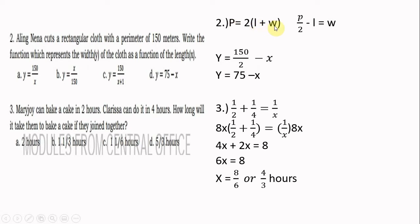We find the formula for width: divide both sides by 2, giving P over 2. Then transpose the length to the left side — it becomes negative length — so P over 2 minus L equals width. Since width is Y and length is X, and the perimeter is 150, we get Y equals 75 minus X. That is the answer.